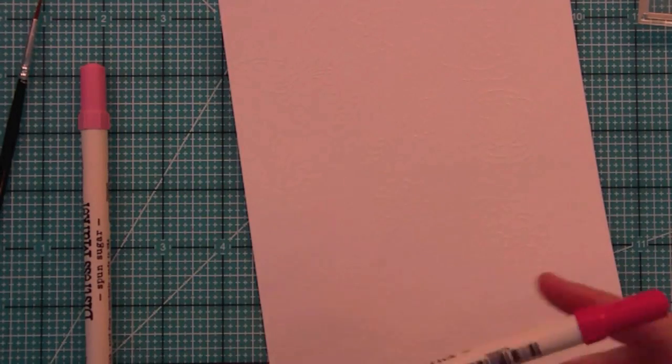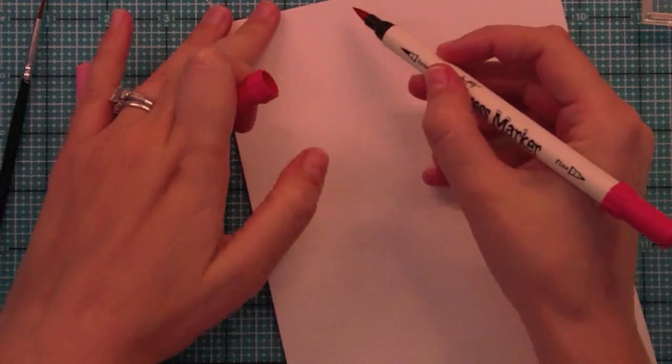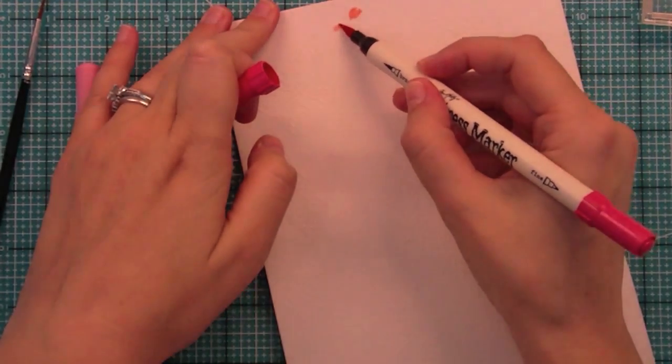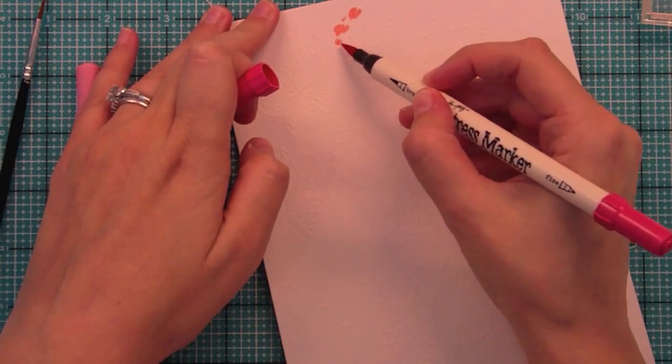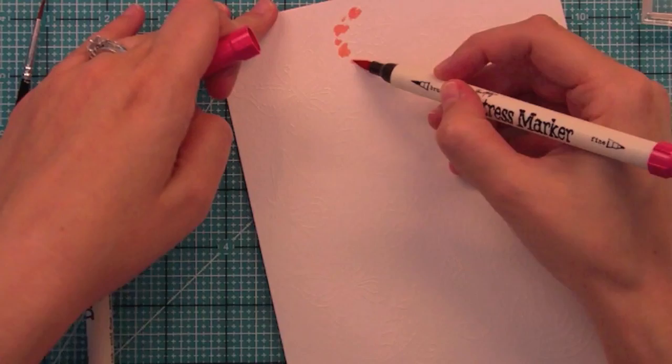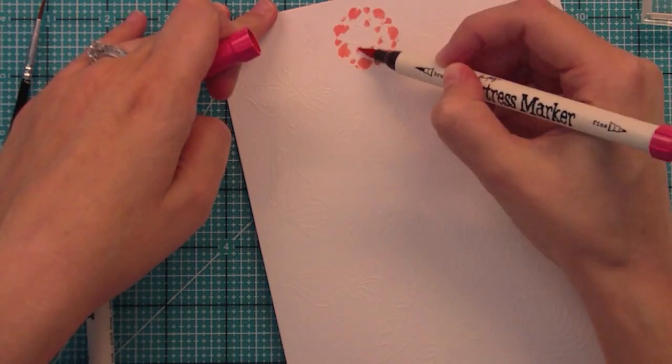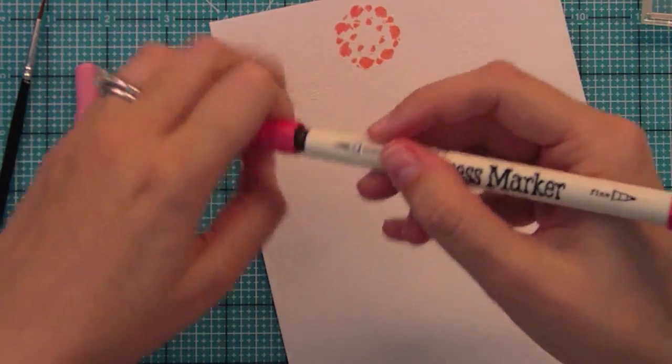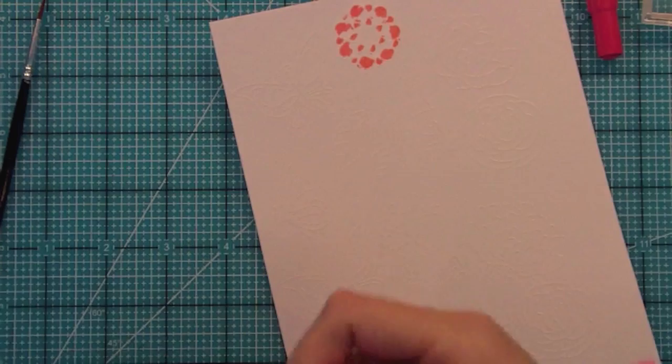Right here the first thing we're going to try is doing some direct to paper on these flowers. These flowers from Flutterby look so cool watercolor. I mean they look awesome. They look really great paper pieced and watercolor and copic colored and everything but the watercolor to me just looks so awesome and so springy. I just love it.